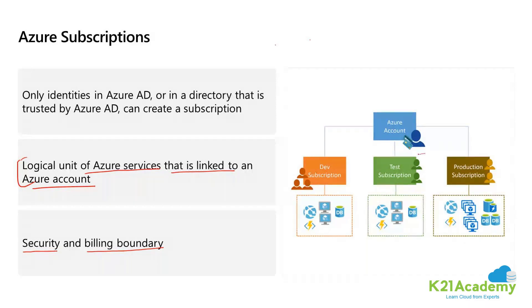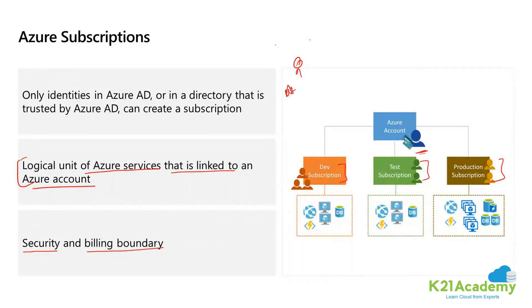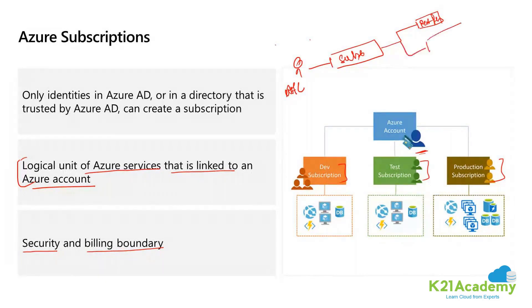If a particular person has bought three different subscriptions — Subscription A, Subscription B, and Subscription C — bought for development, testing, and production purposes respectively, and this user or account starts creating resources, they might create a Test RG, a Dev RG, and a Prod RG.